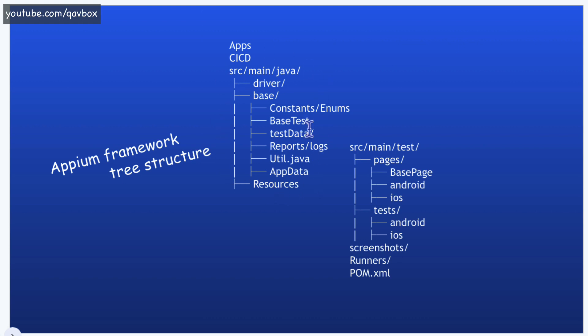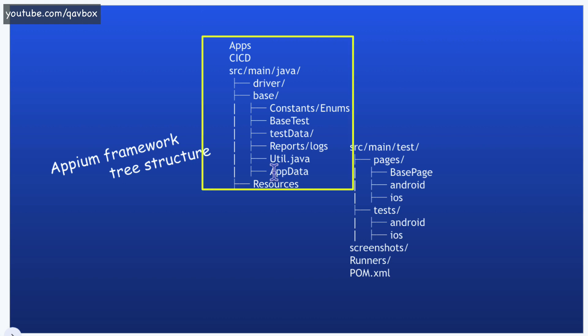The CI/CD folder holds DevOps-related files. For example, if you are creating Docker containers for running Android test cases, you keep the Dockerfile here. If you are using Jenkins, keep the Jenkinsfile with pipeline syntax. If you are using ADO pipelines, keep the YAML files. GitHub Actions YAML files also go here. Anything related to running tests in a CI/CD pipeline can be kept here. As mentioned, keeping it in a specific folder is good for future maintenance as the project scales.